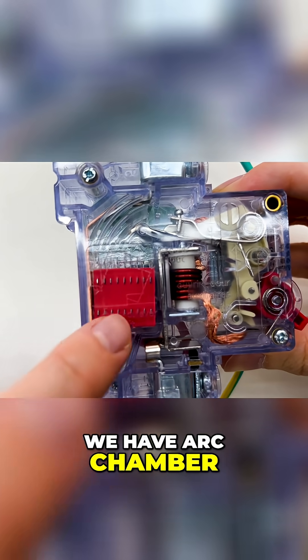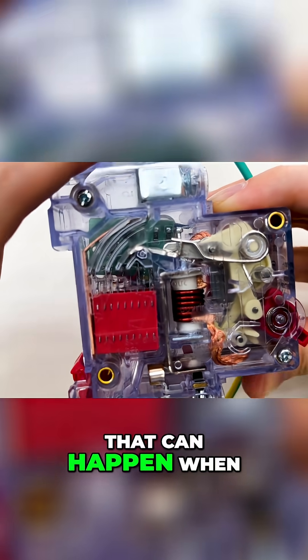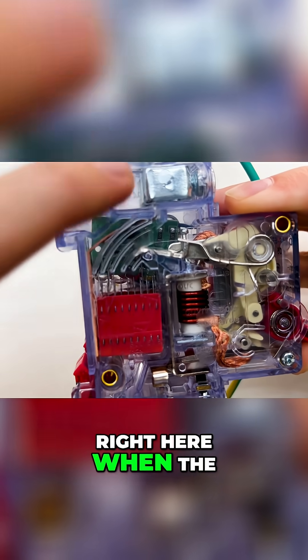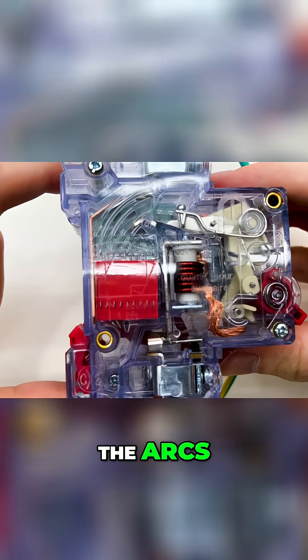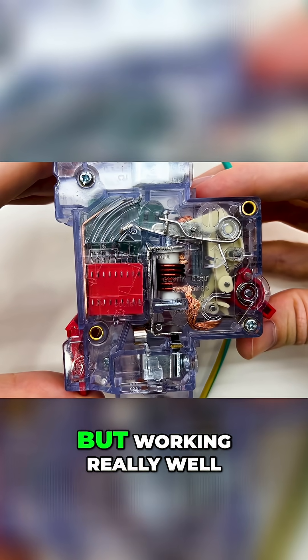Also right here we have an arc chamber. Its purpose is to quicker dispose of the arc that can happen when you break the connection right here when the power is flowing. So this is the breaker part. Simple mechanics but working really well.